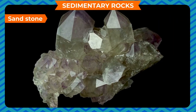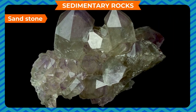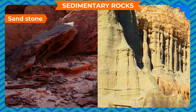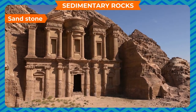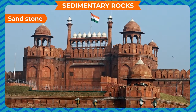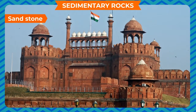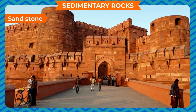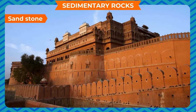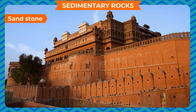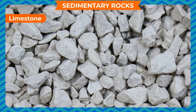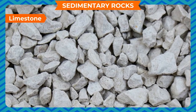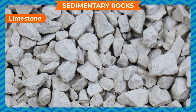Sandstone is the most common form of sedimentary rock. It is formed by the deposition of sand particles close together, and mainly contains quartz mineral. Red sandstone and yellow sandstone are widely used in building purposes. Delhi's Red Fort, the Fort of Agra, and many other palaces in Rajasthan are made of red sandstone.